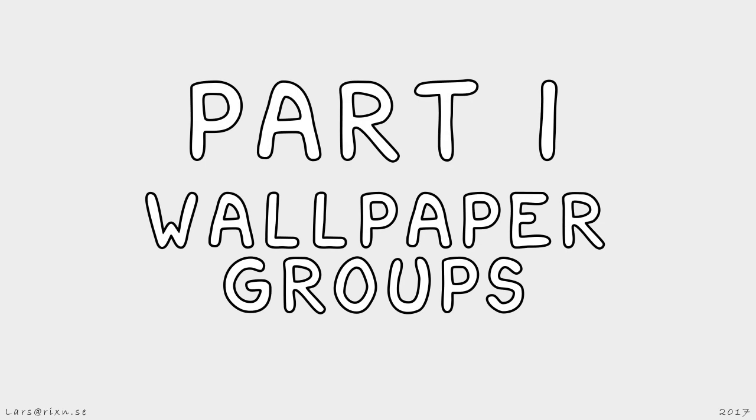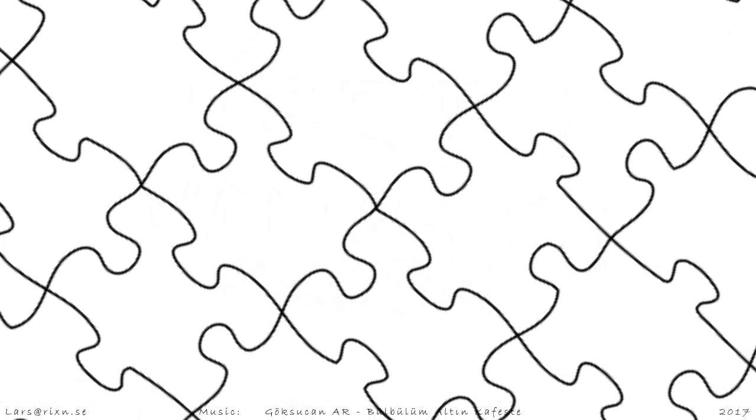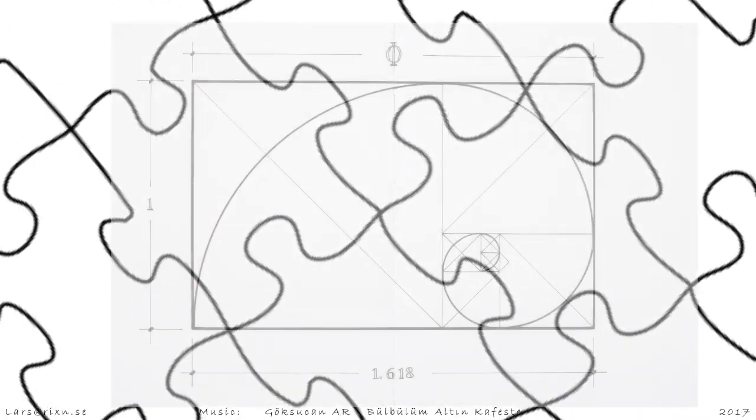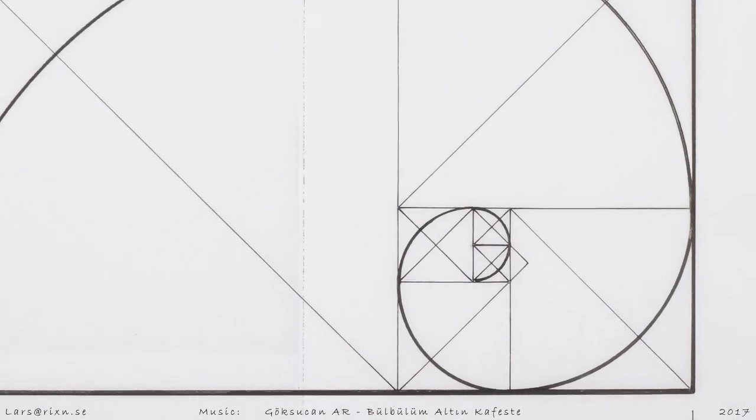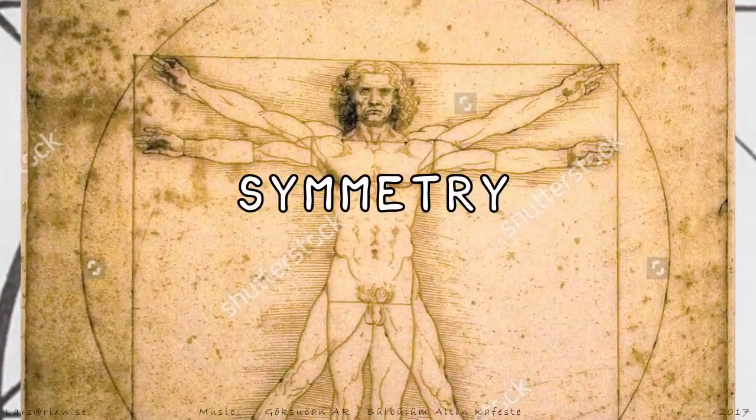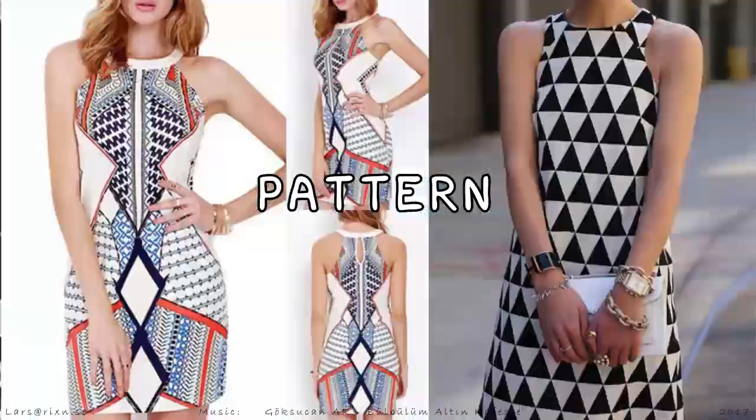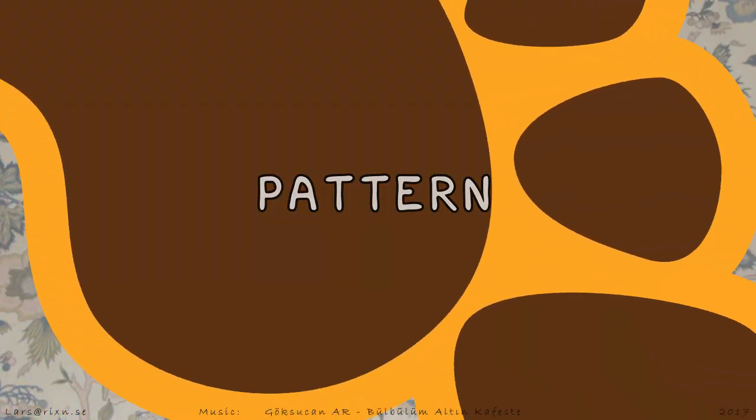Part 1: Wallpaper Groups. Let's talk about pattern and symmetry. Symmetry in pattern. A pattern can be symmetrical in several ways.